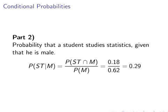Second one, probability that a student studies statistics given that he's male. So ST given M. So again, the joint probability, probability of ST and M is 0.18. The probability of male from before is 0.62. So just dividing those out, we get an answer of 0.29.